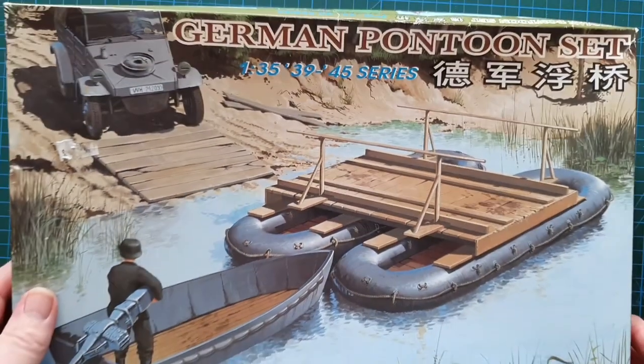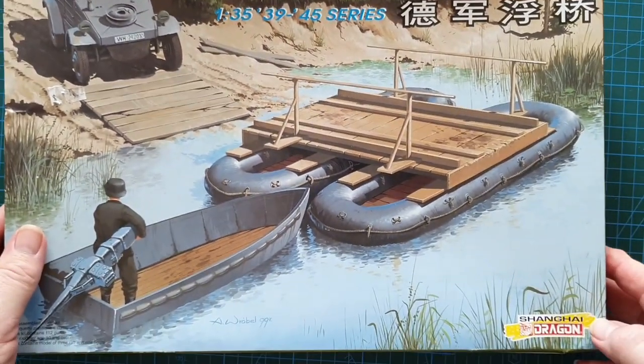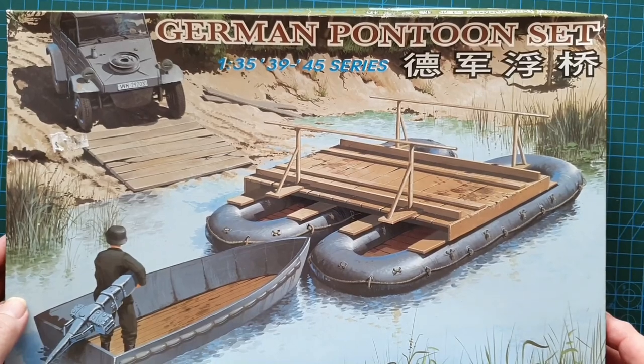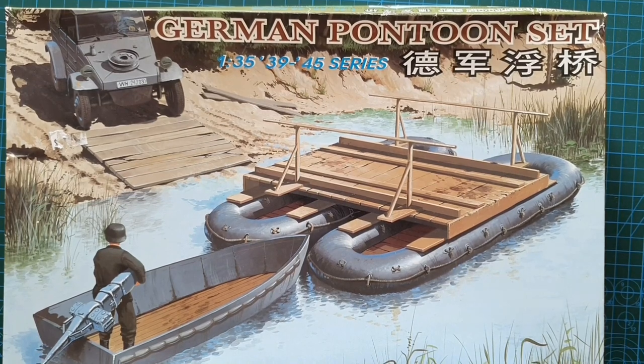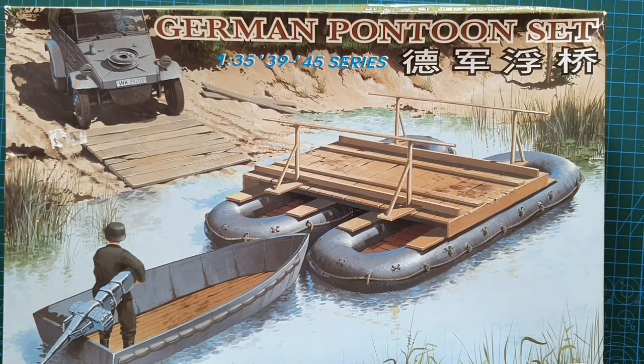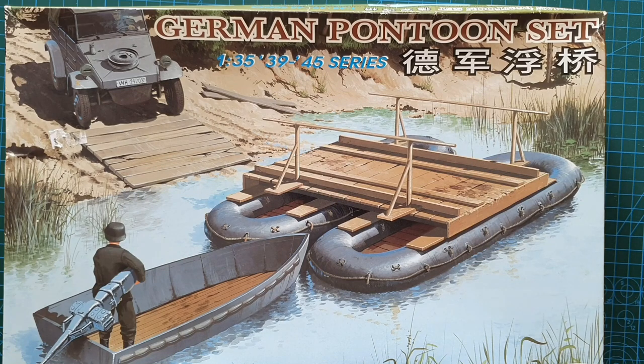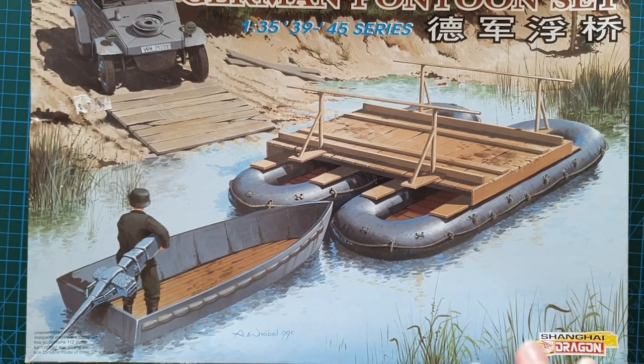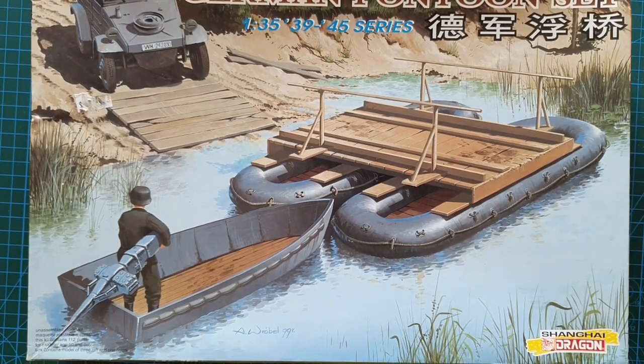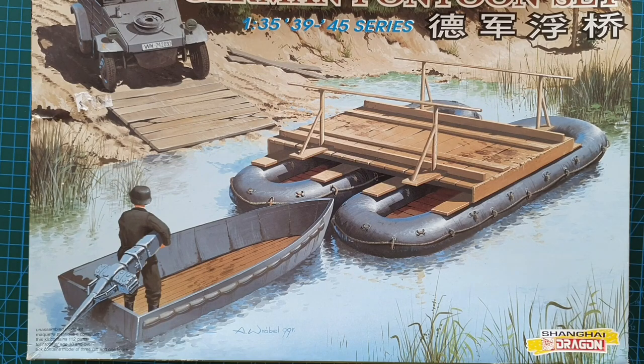That is it, that is Dragon Shanghai German pontoon set, kit number 6135, came out in 1999. Yes it is out of production but as you can see it's still available because I got this one for 35 bucks, so it's just a matter of keeping an eye out if you really want one of these. Quite a large kit, quite a simple kit to put together, most of the time would be probably spent in painting it but apart from that I do like this, I do like this, I just have to find enough space on the shelf for it.